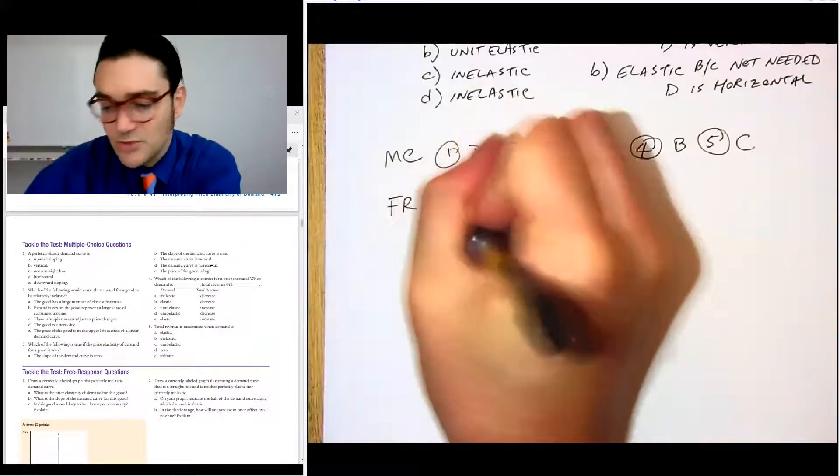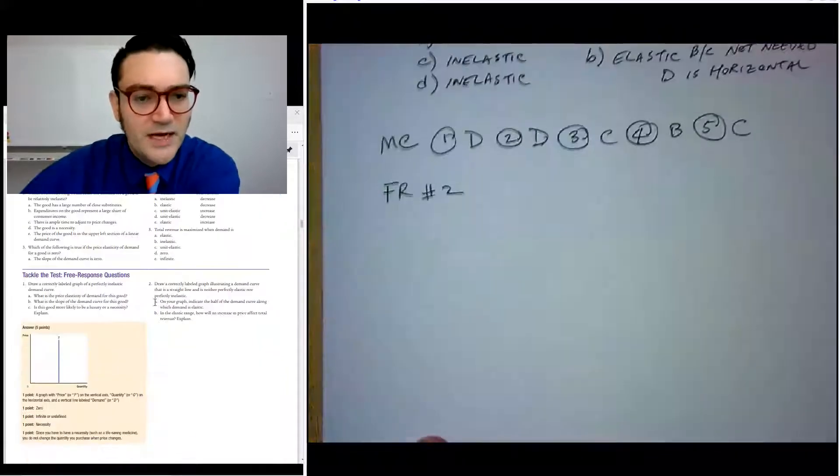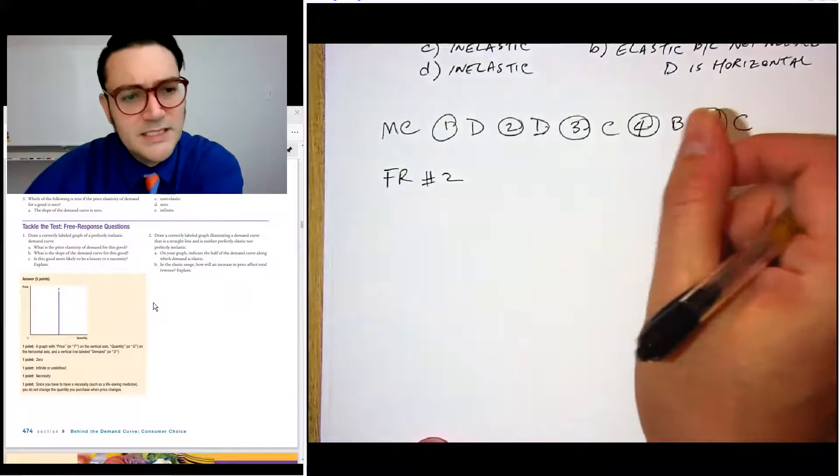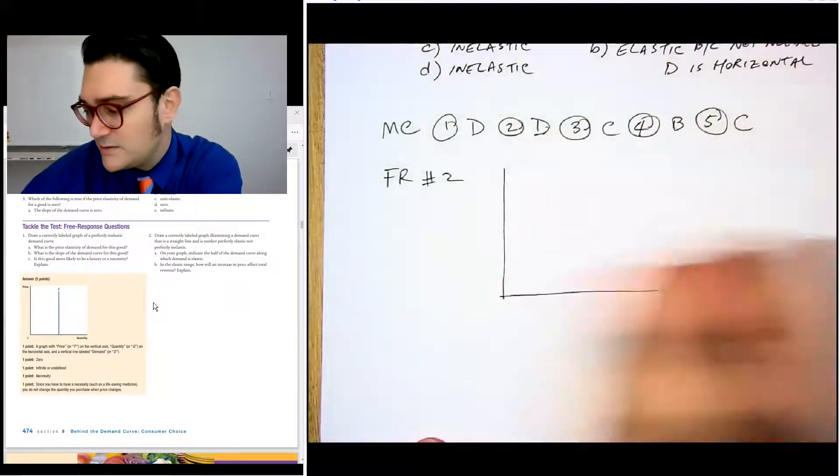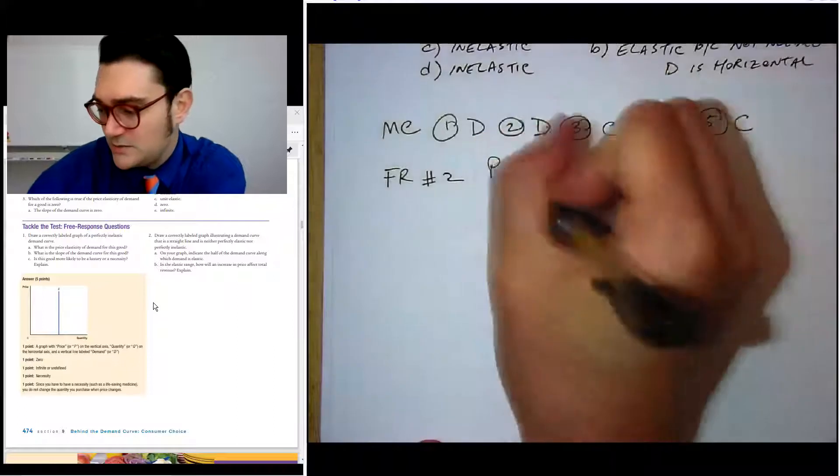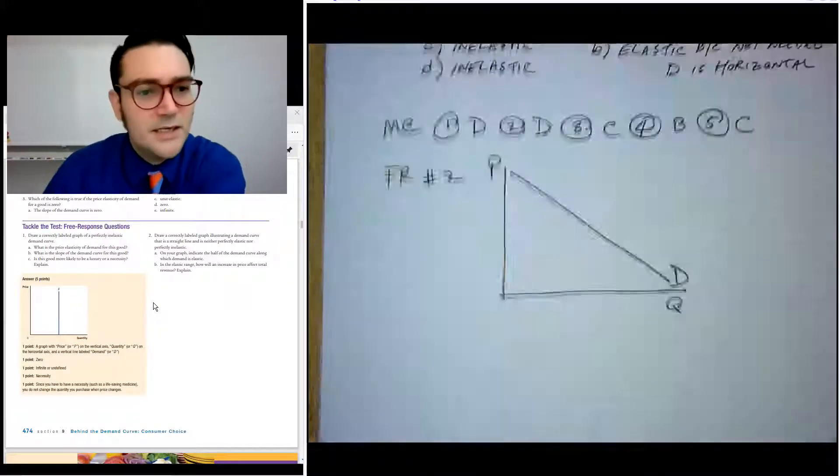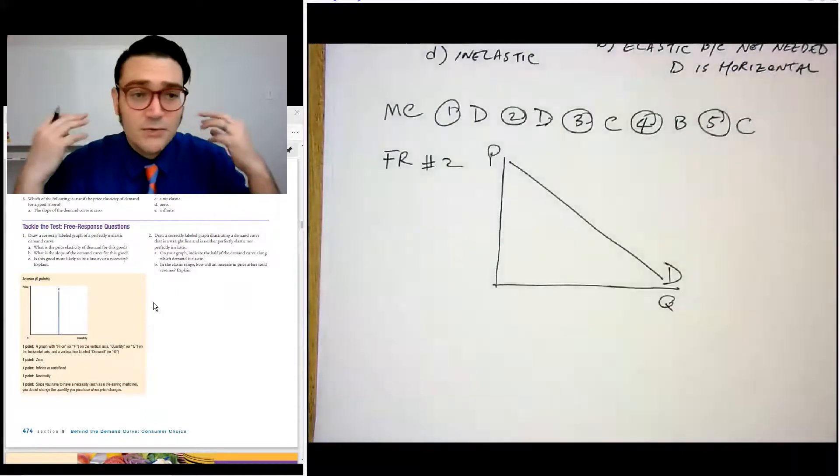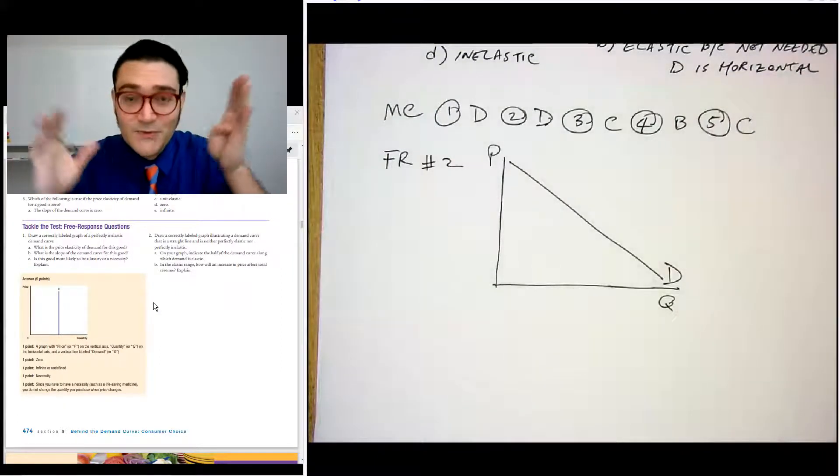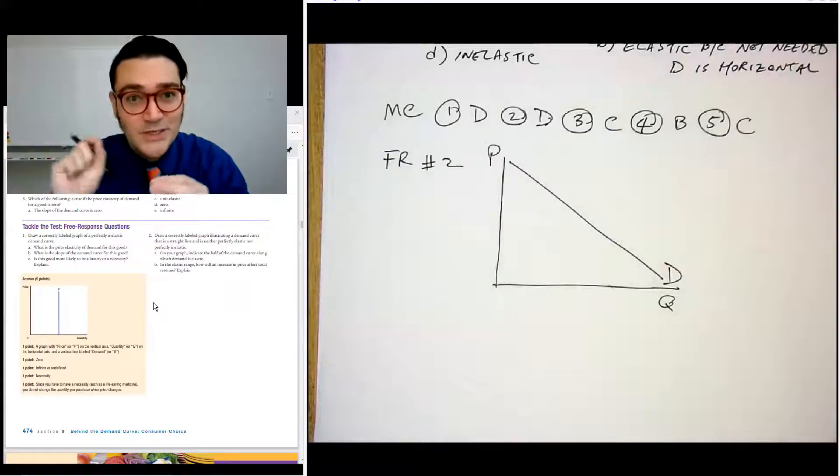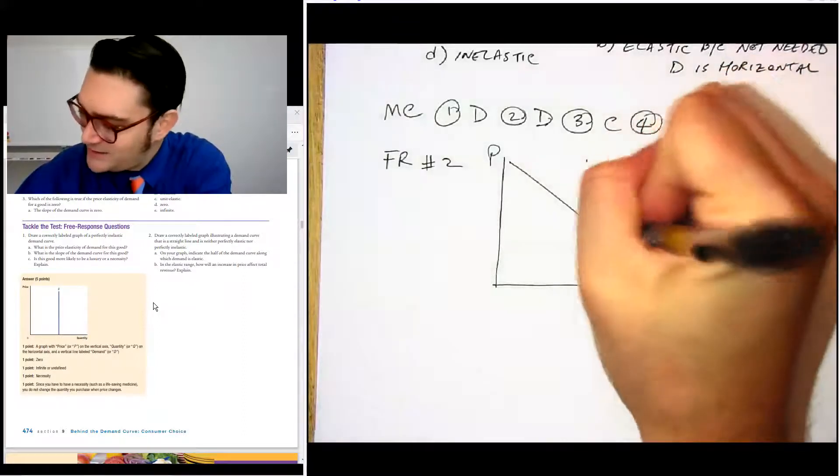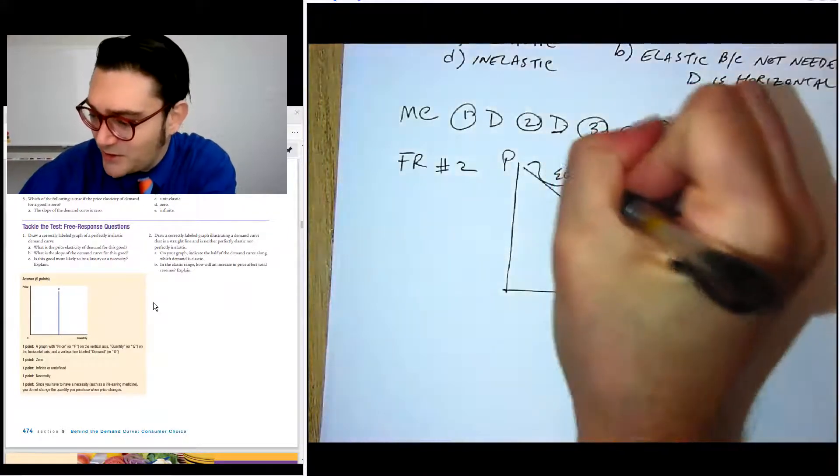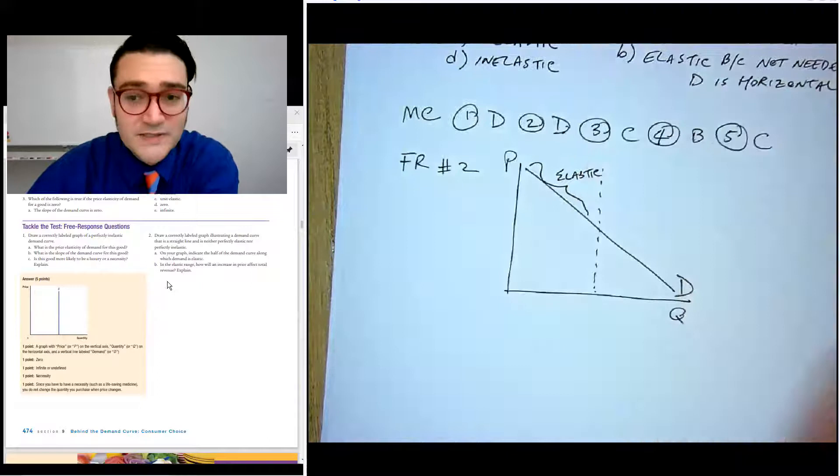Let's tackle free response. Number two, draw correctly labeled graph illustrating a demand curve that is a straight line and is neither perfectly elastic nor perfectly inelastic. Quantity, price. Tada done. On your graph indicate the half of the demand curve along which demand is elastic. So I just can remember it that E comes before I and in the middle is the unit elastic point. So we could just be like, this is the elastic range and the other half is the inelastic range.